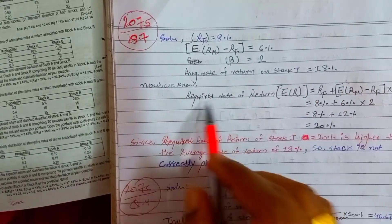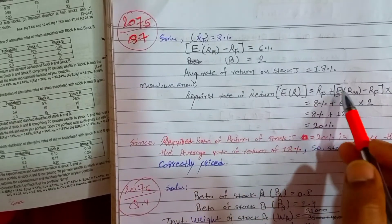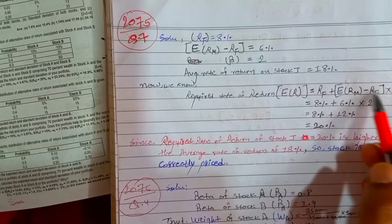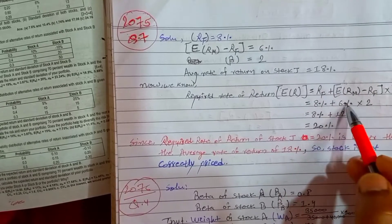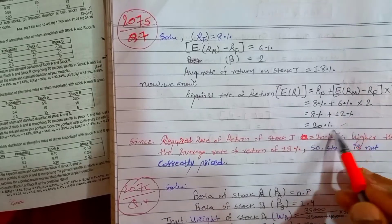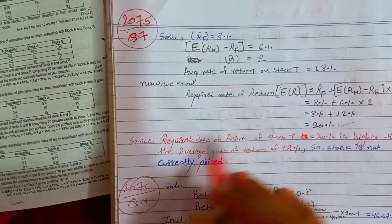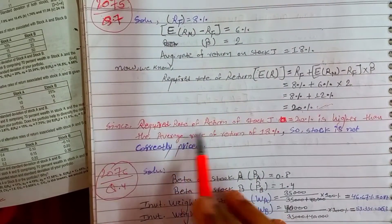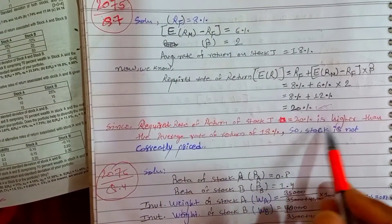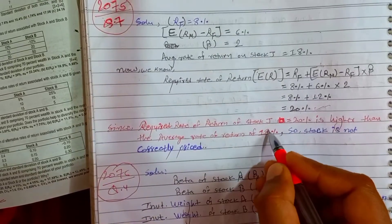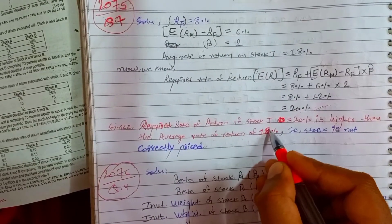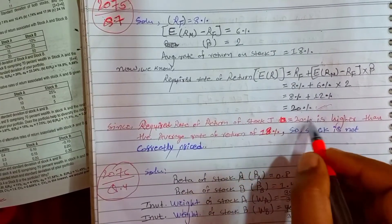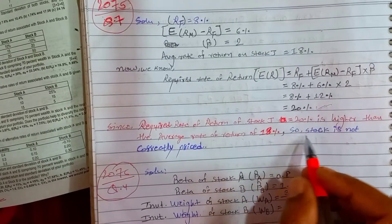We know that required rate of return = rf + market risk premium × beta = 8% + 6% × 2 = 20%. The required rate of return of Stock J is 20%, which is higher than the average rate of return of 18%.